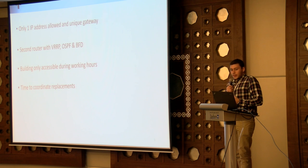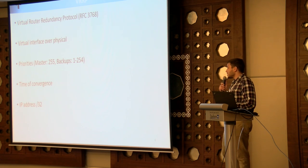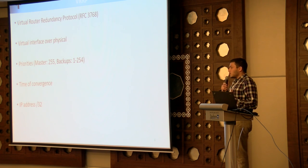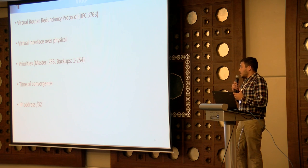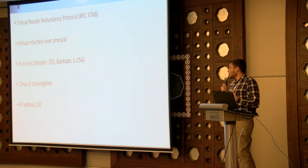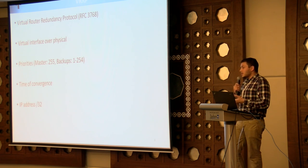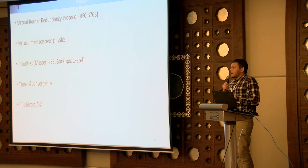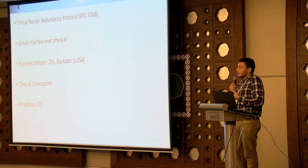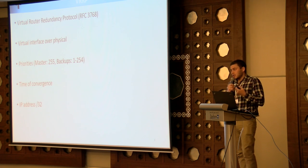So I asked for permission to add a second router using Virtual Router Redundancy Protocol, OSPF, and BFD. VRRP is defined in RFC 3768. It allows you to create a master-backup failover configuration with two or more routers using a virtual interface that runs over a physical one. When setting up the VRRP interface you set a virtual router identifier that must be the same for all routers participating in the failover environment, and you set priorities — the highest priority is 255 for the master.